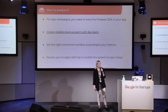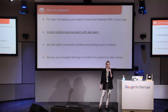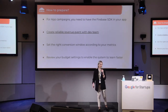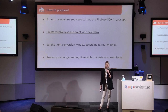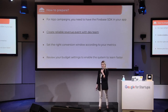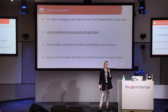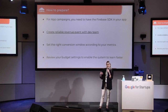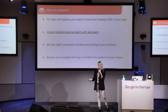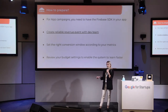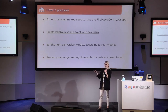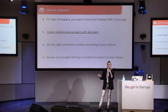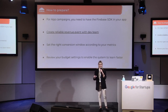How to prepare. First of all, for app campaigns, you need to have Firebase SDK on your app. Then — and I underline this because it is the most important one in my opinion — create a reliable revenue event with your development team. Make sure that the revenue event is as accurate as possible to prevent overvaluing or undervaluing users. Then set the right conversion window according to your metrics. Keep in mind that the longer the conversion window, the more time the system will need to learn. And lastly, review your budget settings to enable the system to learn faster.